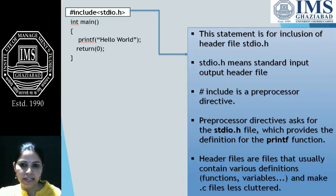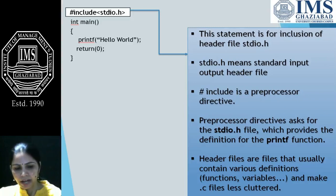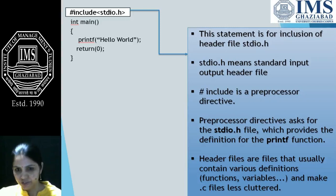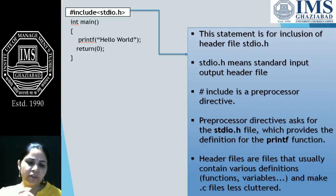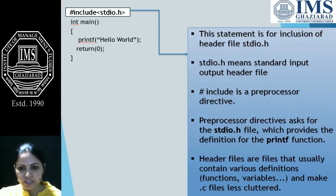Hash include is a preprocessor directive. Preprocessor directives are statements which are used to process the program — those which are used for preprocessing of the program before compilation. The preprocessor directive stdio.h indicates that we need to find the function definition for printf here. We are using printf function and the definition of printf is written in stdio.h. Header files are files that usually contain various function definitions and make the C file less cluttered.